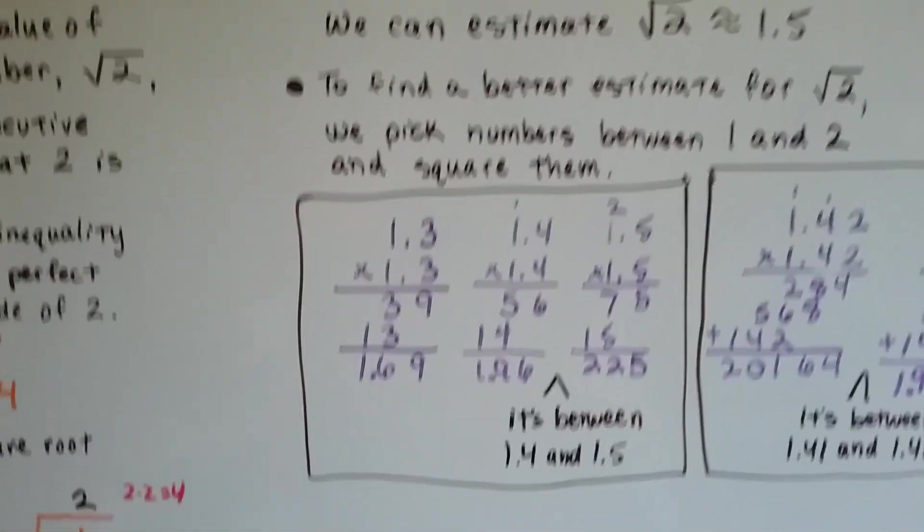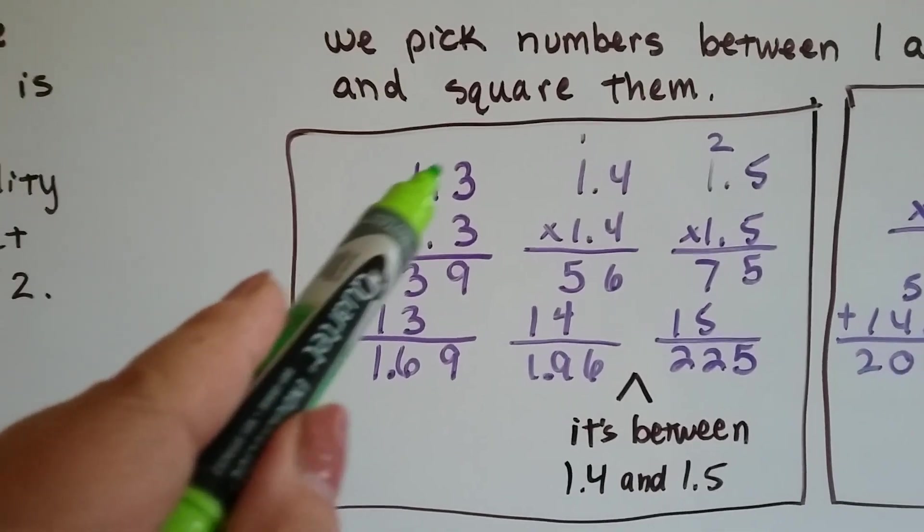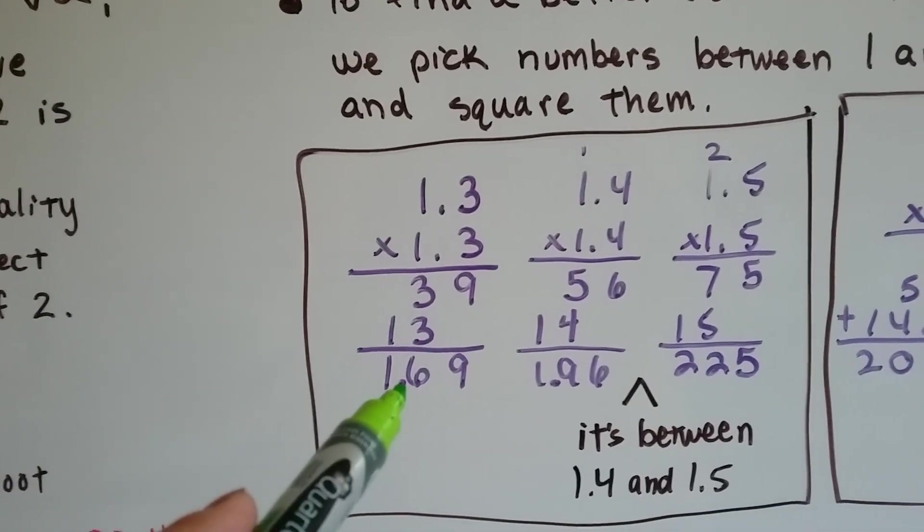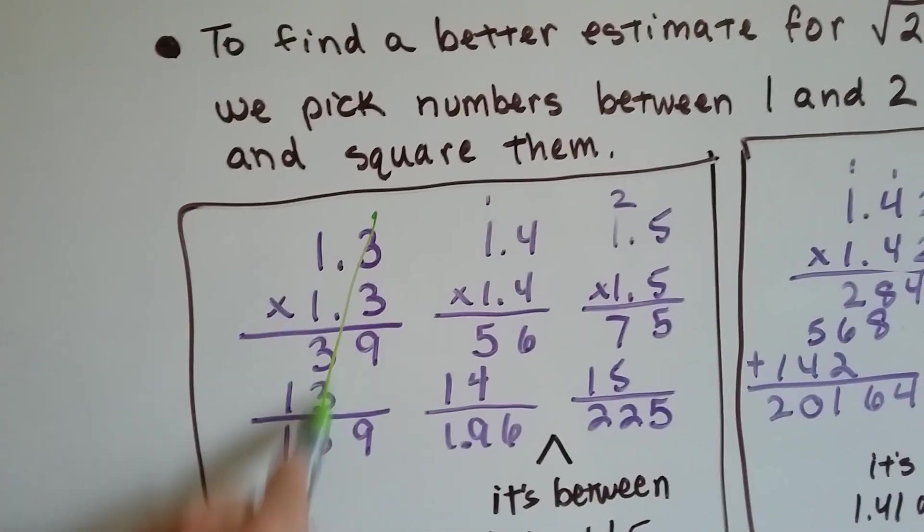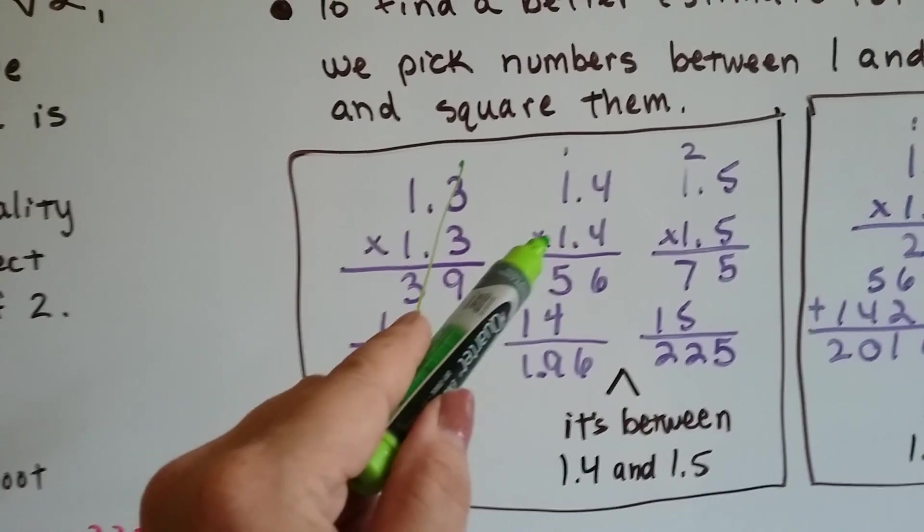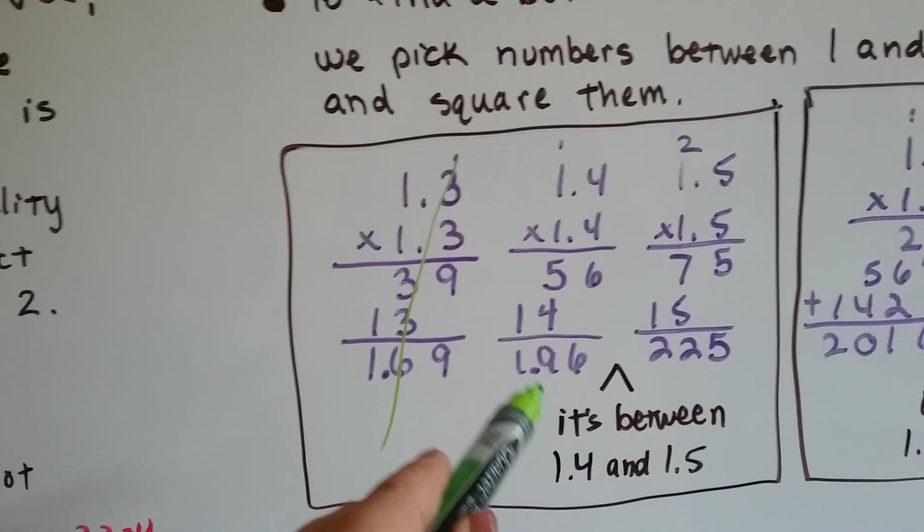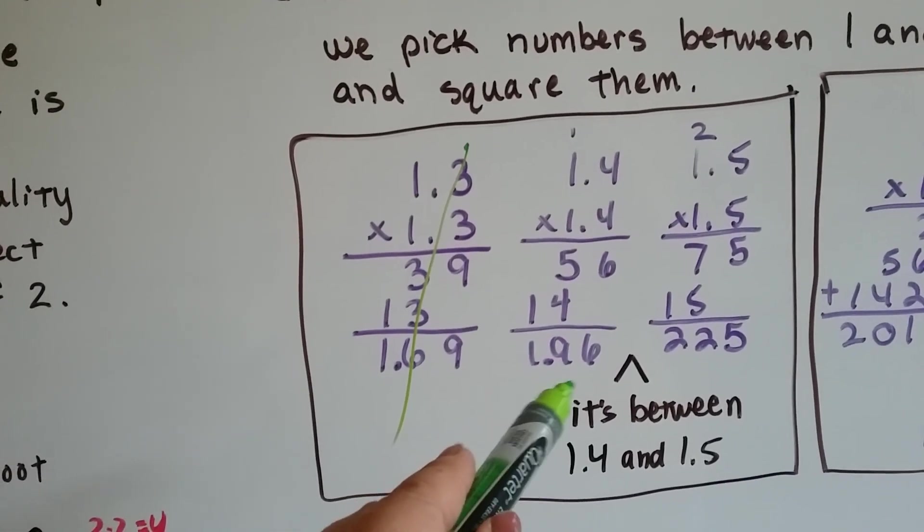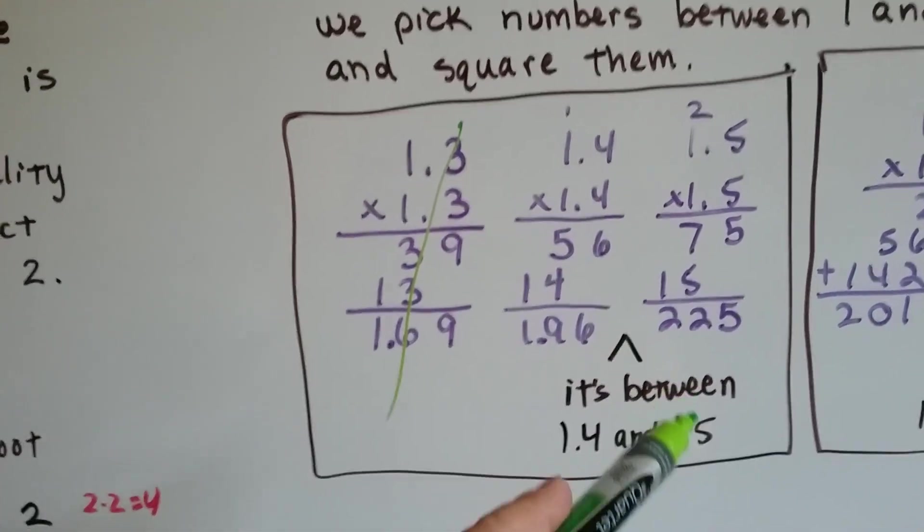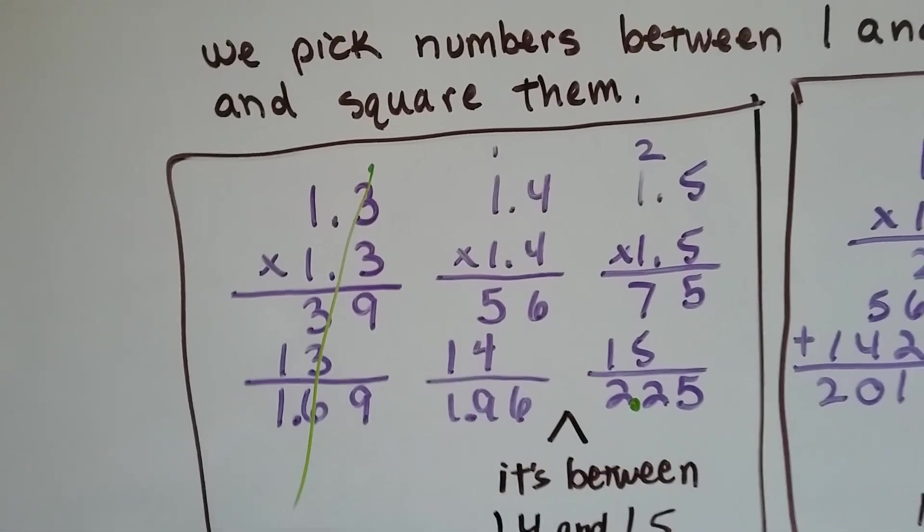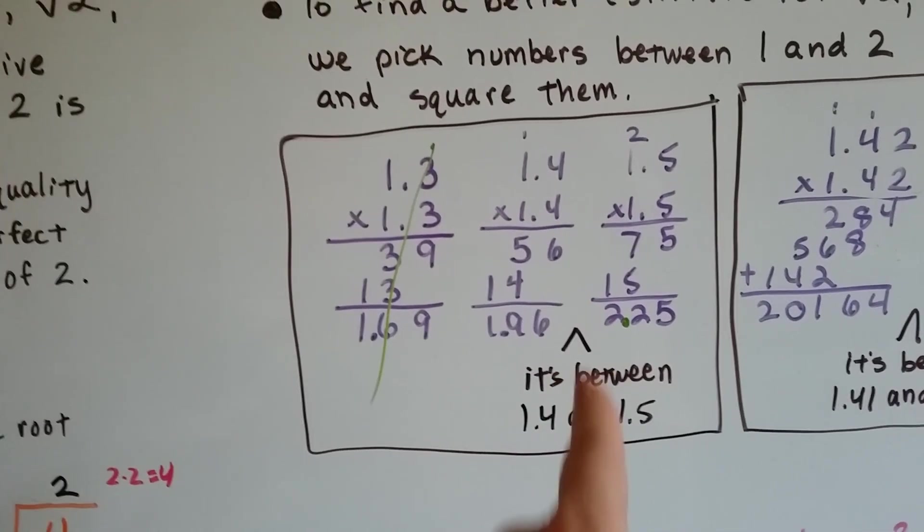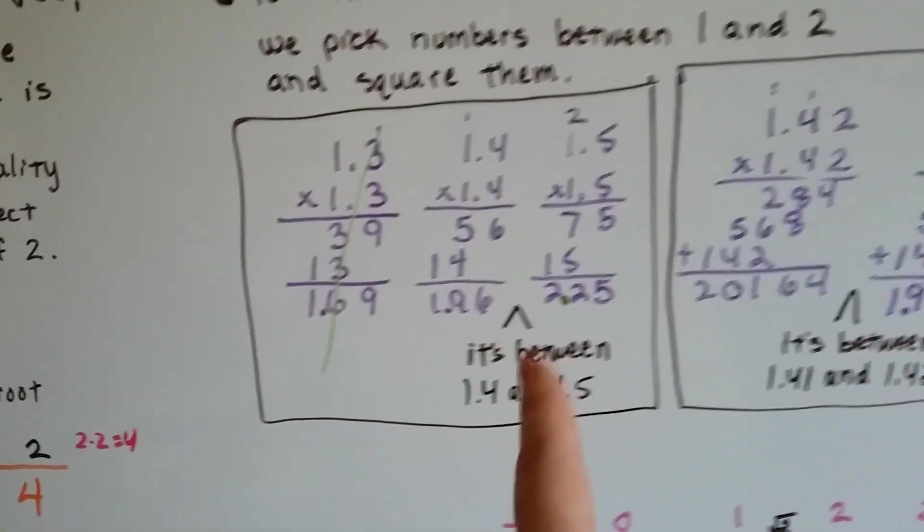So I tried 1.3. I multiplied 1.3 to 1.3 and I got 1.69 - well, that's not big enough. Then I tried 1.4. 1.4 times 1.4 came out to 1.96, that's pretty close, that's almost 2. I tried 1.5 and 1.5 multiplied to themselves got 2.25. That was too big, so I know it's somewhere between 1.4 and 1.5.